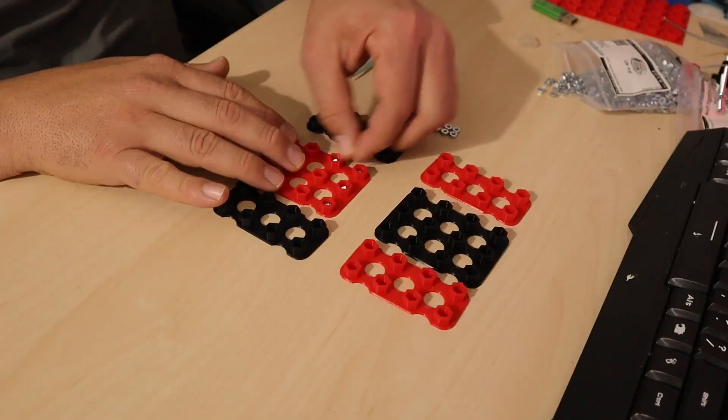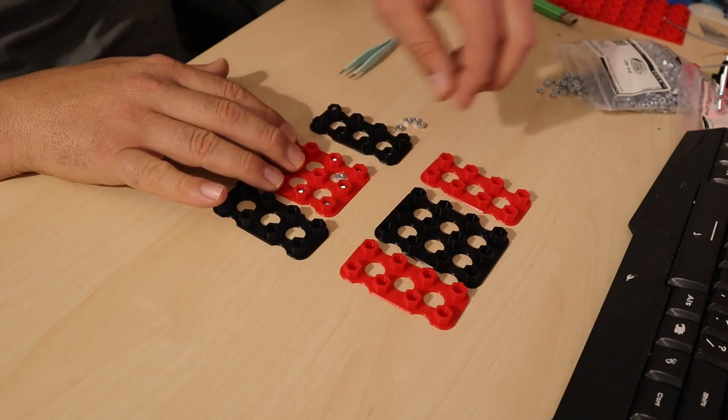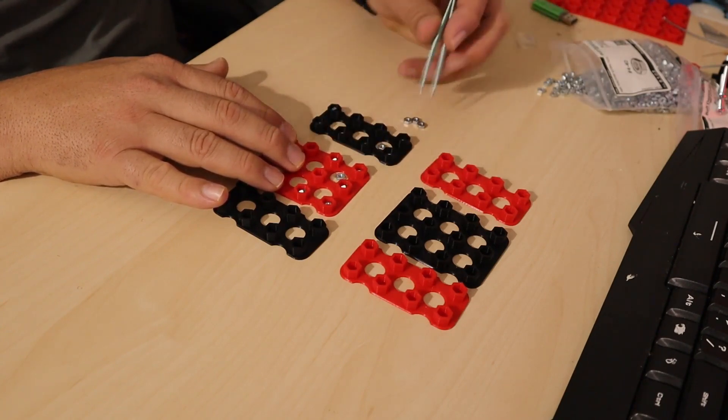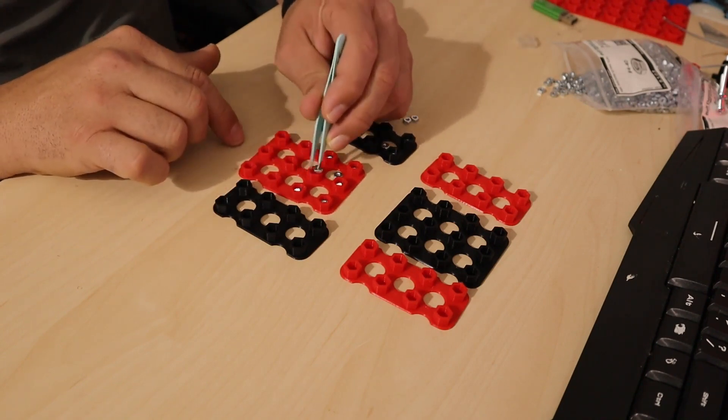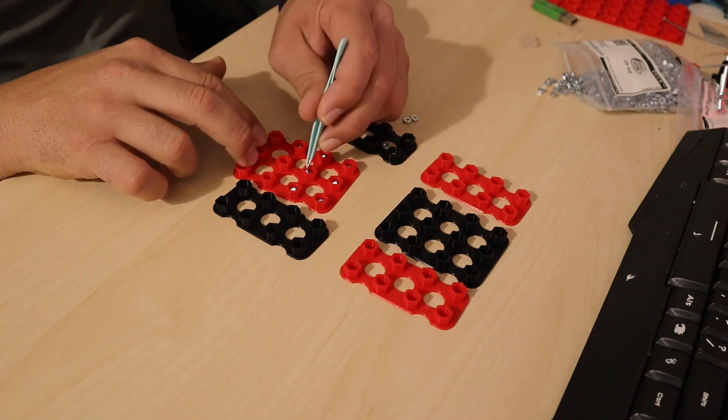For the first step, we are going to take each nut and place them in little holes that these specific tools or pieces have. They have the same shape of the nut, so it's going to be easy for you to assemble.